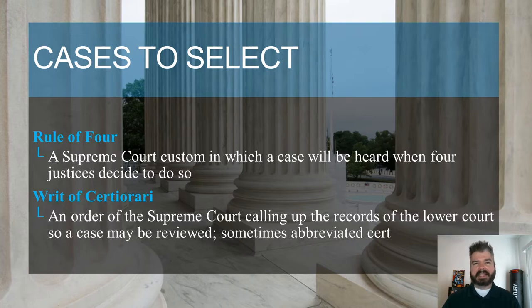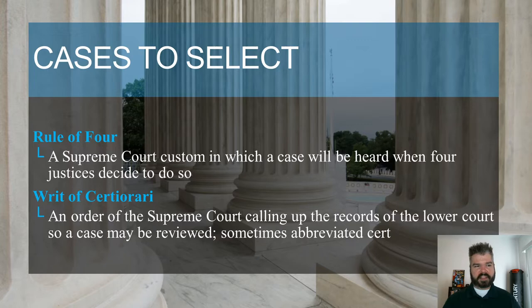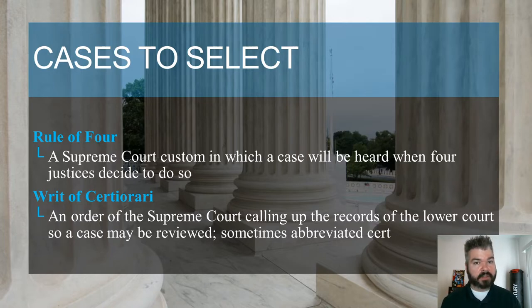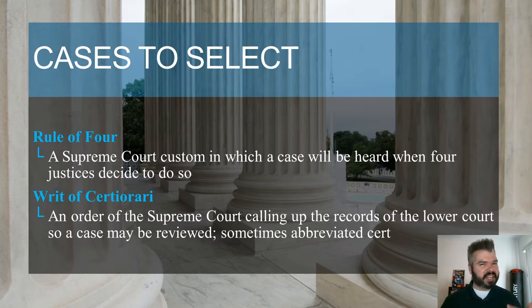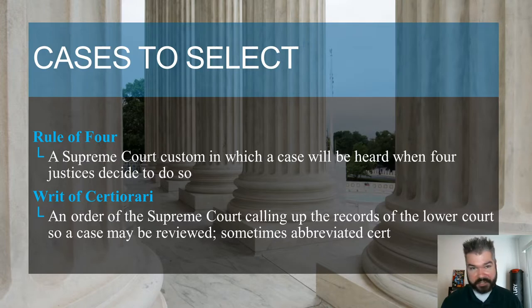The writ of certiorari — sometimes abbreviated as 'cert' — is an order of the Supreme Court calling upon the records of the lower court so that a case may be reviewed. The Supreme Court may issue this writ to have all records from the lower court sent up for review. But again, discretionary jurisdiction means if four justices decide to hear a case they'll hear it; if only three or fewer agree, no matter how important the case, it will not be heard and the lower court's decision stands.